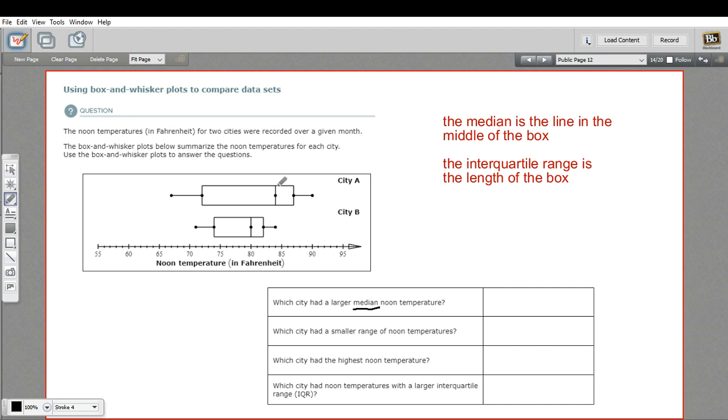The median is that line in the middle of the box. So clearly this line here is greater. That's 84. This one's only 80. So that's city A.